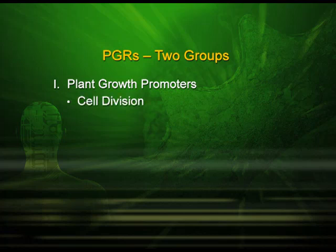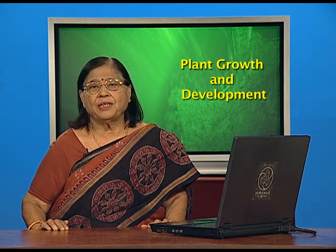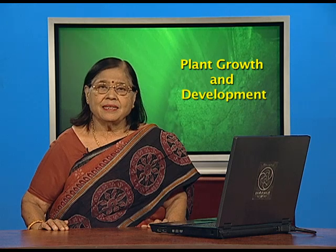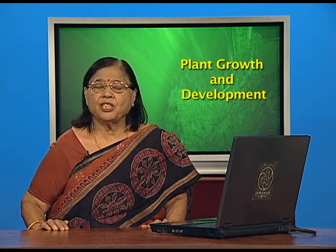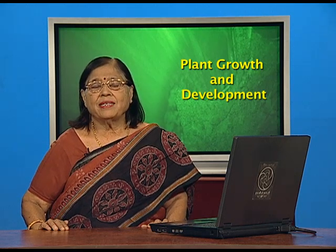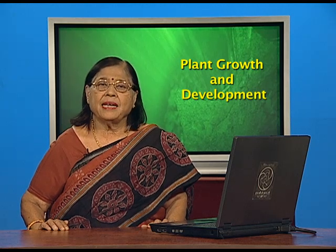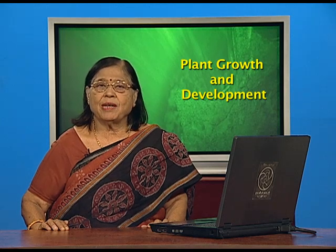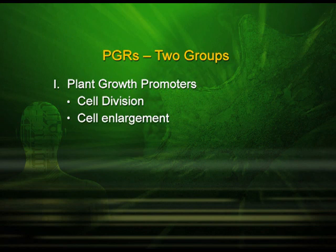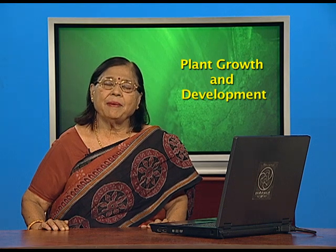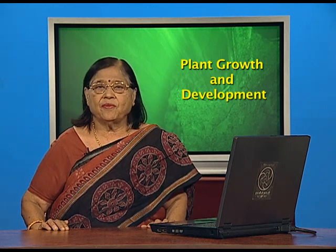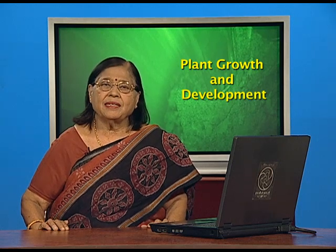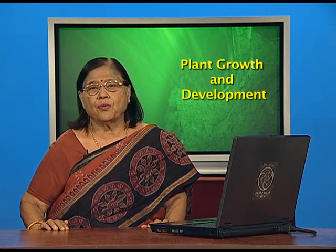Plant growth promoters help in cell division — when one cell divides into two, that is growth, that is promotory activity. They also help in cell enlargement, that is increase in the size of the cell. First one cell becomes two, then both cells enlarge; that is growth. Some PGRs help in pattern formation — how branches will come, how many flowers in one twig, how many fruits — that formation of the plant body is also controlled by these PGRs.